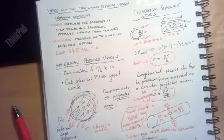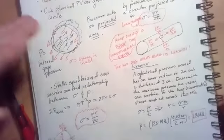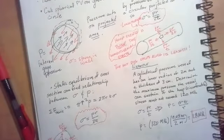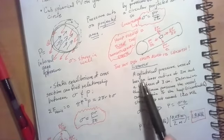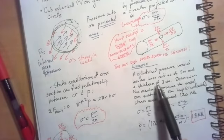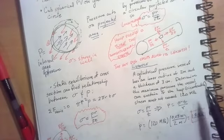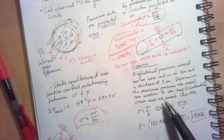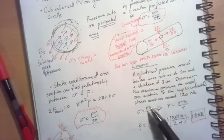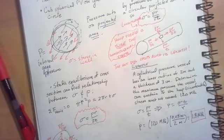So let's do an example of how we would calculate stresses and use the formulas that we've developed. For our example, a cylindrical pressure vessel has an inner radius of 2 meters and a thickness of 3 centimeters. We'd like to determine the maximum pressure the vessel can sustain if the hoop or circumferential stress must not exceed 120 megapascals.